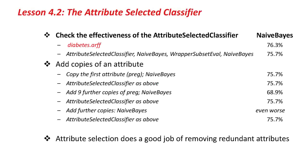I'm going to check the effectiveness of the attribute selected classifier for getting rid of redundant attributes. I'm going to open the diabetes dataset and use the attribute selected classifier with NaiveBayes. Remember that when you add redundant attributes, the performance of NaiveBayes gets worse. So I'm going to add redundant attributes — copies of attributes — and then use the attribute selected classifier to see if performance still gets worse, hoping it doesn't. The attribute selected classifier should get rid of those redundant copied attributes.